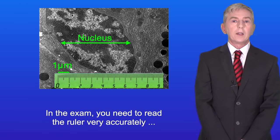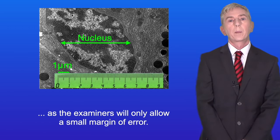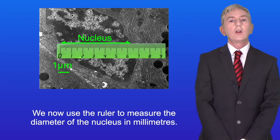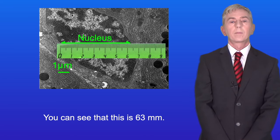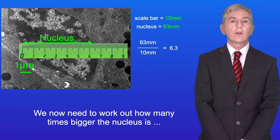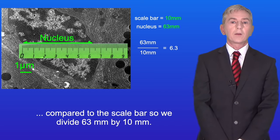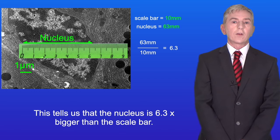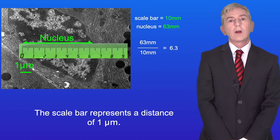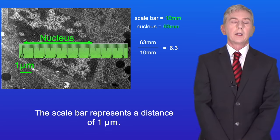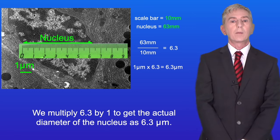In the exam you need to read the ruler very accurately, as the examiners will only allow a small margin of error. We now use the ruler to measure the diameter of the nucleus in millimeters — this is 63 millimeters. We divide 63 millimeters by 10 millimeters, which tells us the nucleus is 6.3 times bigger than the scale bar. The scale bar represents one micrometer, so we multiply 6.3 by 1 to get the actual diameter of the nucleus as 6.3 micrometers.